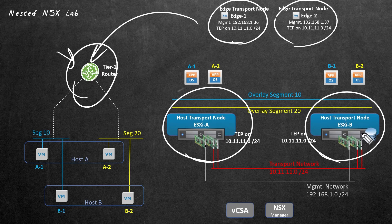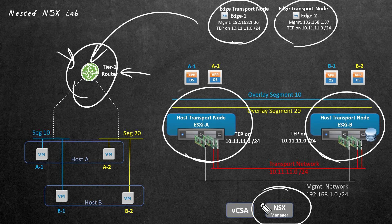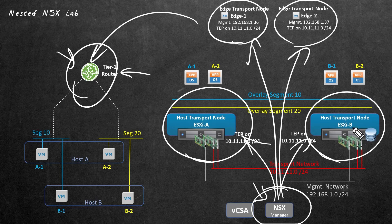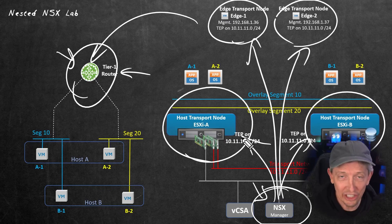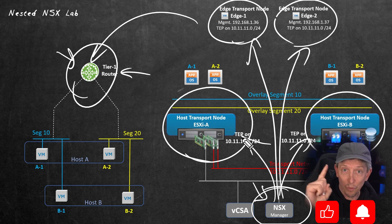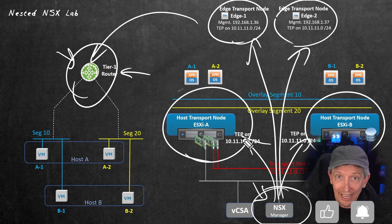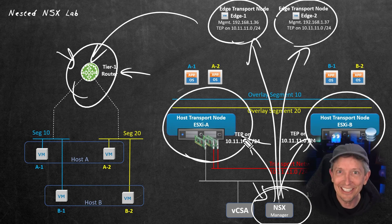At this point in our journey, we have ESXi A, ESXi B, Edge 1, and Edge 2 — all of which effectively have a copy or instance of this Tier 1 gateway. If any of those nodes needs to make a routing decision, they all have information about directly connected networks and associated IP addressing. The control plane — the NSX management cluster — provided all that information to those four transport nodes: two edge transport nodes and two ESXi hosts acting as host transport nodes. In the next video, I'd like to kick it up a notch by using not just one logical gateway in NSX, but actually several. I'll see you soon.